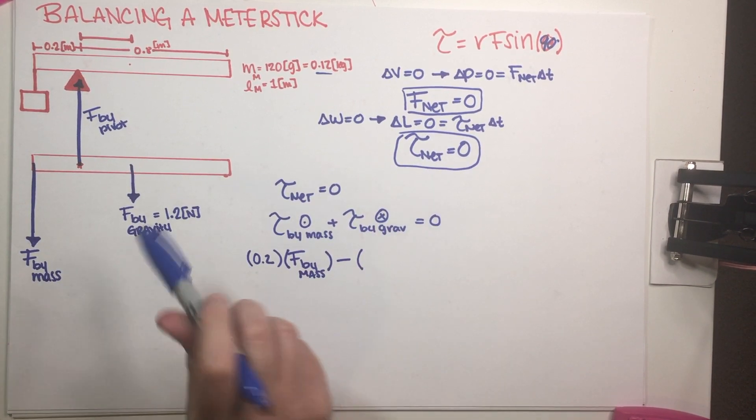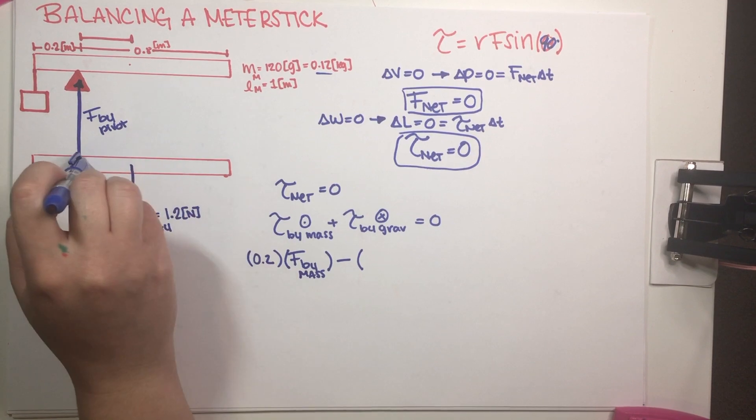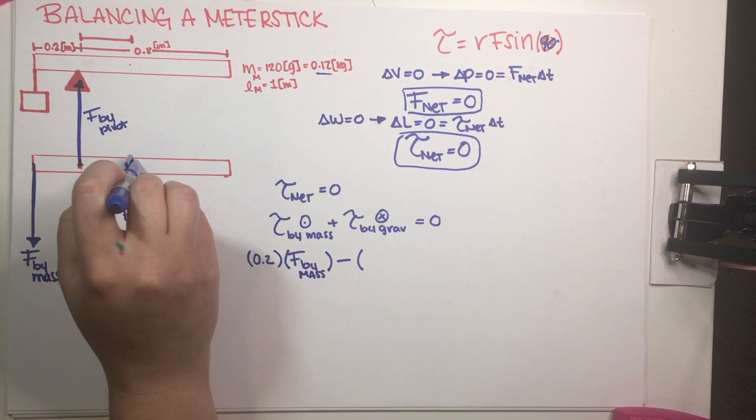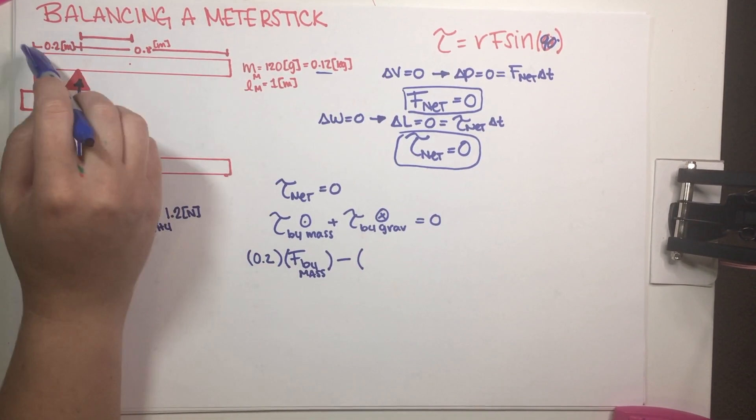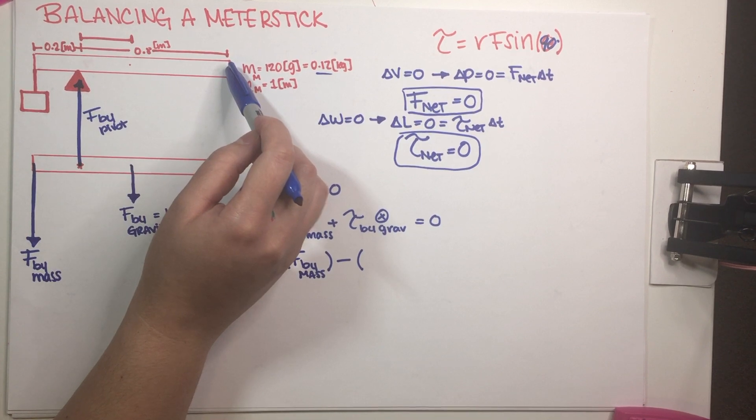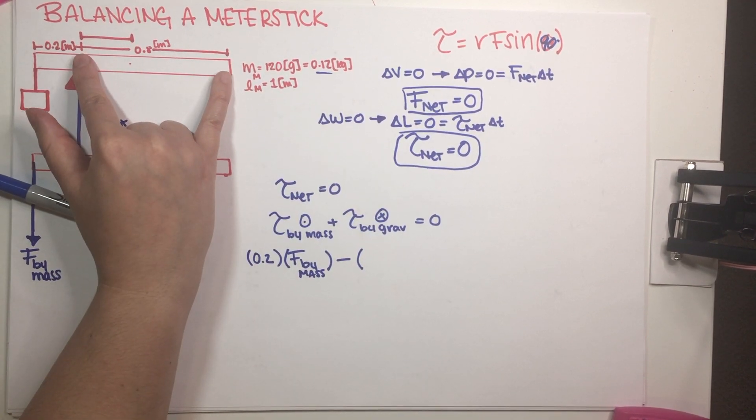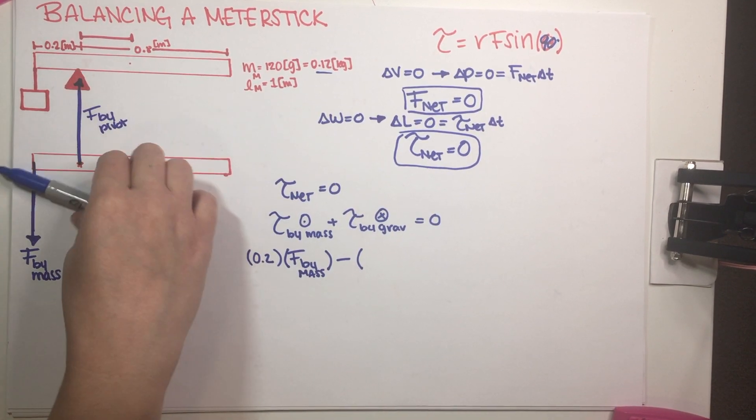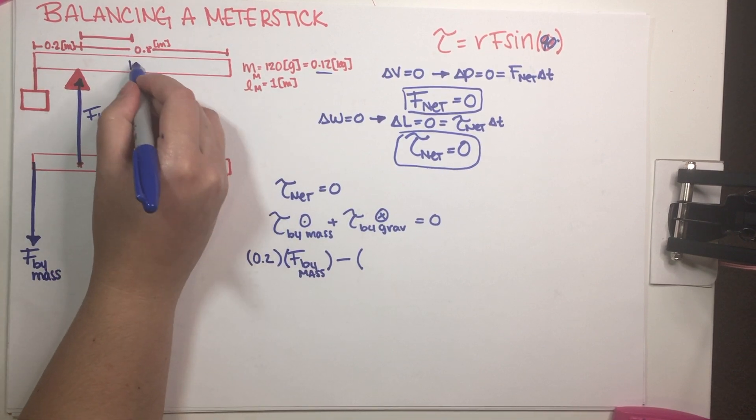And then this one is going in, so this is negative. This distance right here, so this would be R to the gravity vector. So if this entire thing is 1 meter, and then this chunk right here is 0.8 meters, and you know that this is at the center, so this is 0.5 meters,